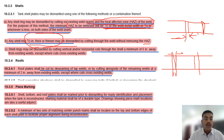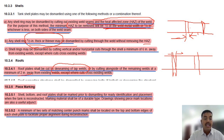Roof plates will be cut by de-seaming of lap welds, or by cutting alongside the remaining weld at a minimum two inches away from the existing welds. These are key terms that are usually asked in the open-book questions.